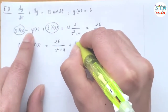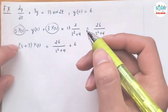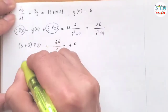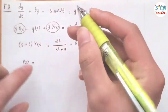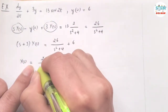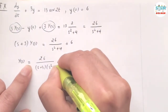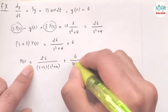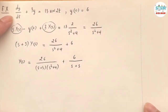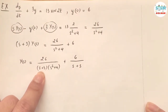Moving the negative 6 to the other side gives positive 6. Now dividing both sides by (s plus 3) to isolate capital Y(s), I get: Y(s) equals 26 over (s plus 3)(s squared plus 4), plus 6 over (s plus 3).